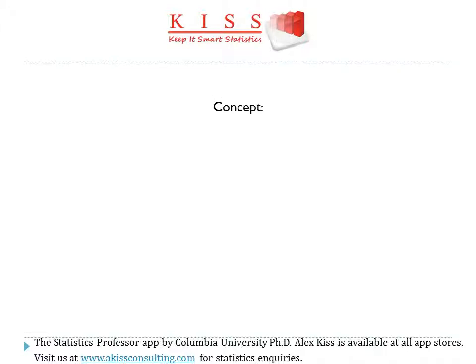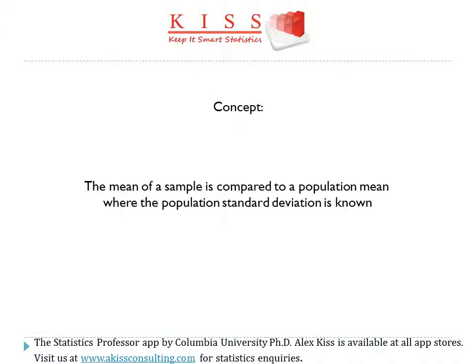For a one sample Z test, the concept behind the test is that the mean of a sample is compared to a population mean where the population standard deviation is known. The last part — population standard deviation being known — is the key identifying feature here, since this distinguishes it from a one sample T test in which the population standard deviation is unknown.